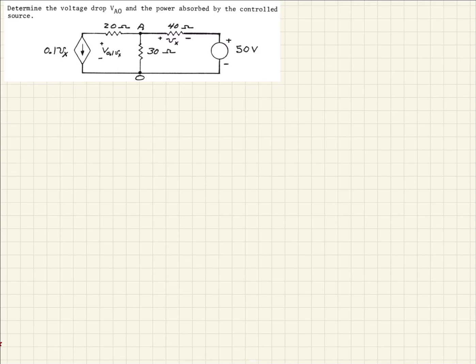So in this example, given this simple circuit here, we note we do have an independent voltage source here.